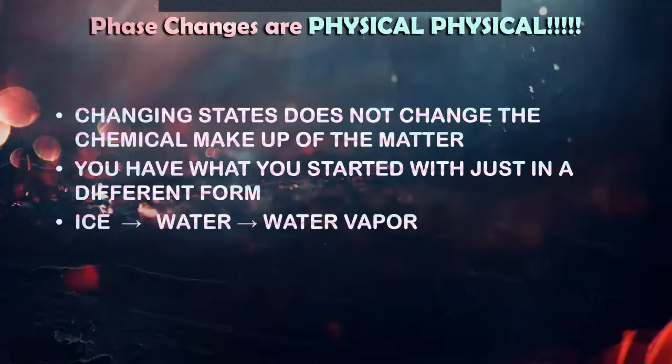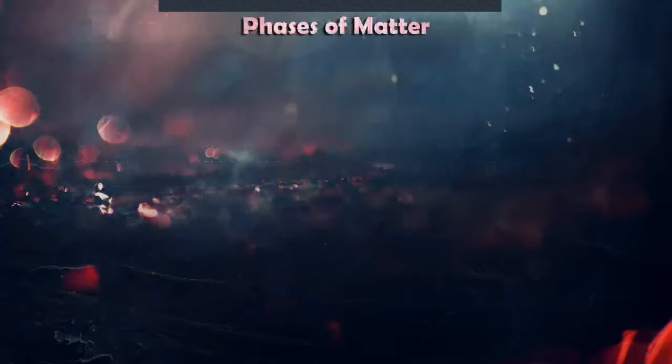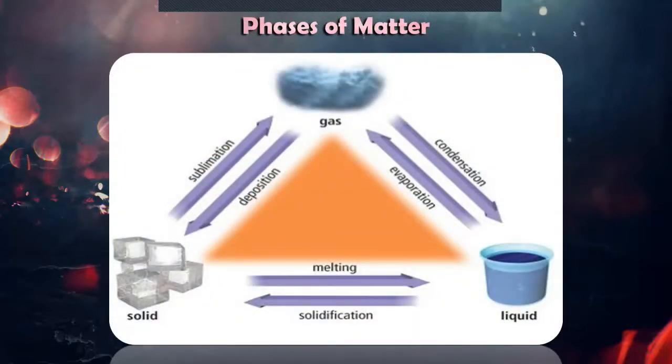Here is an example: phase changes of H2O, ice to water to water vapor. Still, the composition is hydrogen, two hydrogen, and one oxygen. With the presence of heat, from solid, it becomes water or liquid, and from water, it evaporates and become gas.